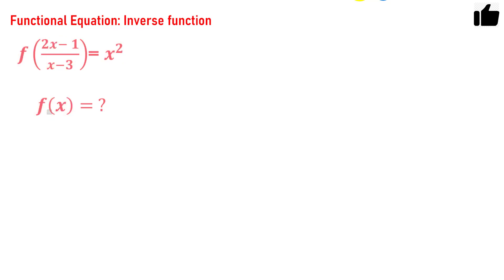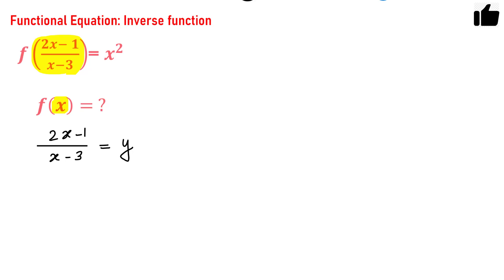The argument here is (2x minus 1) divided by (x minus 3), but the argument of f(x) is just x. So somehow we have to convert this argument into x — that is the basic idea to solve this problem. Let us assume that (2x minus 1) divided by (x minus 3) equals some variable y.